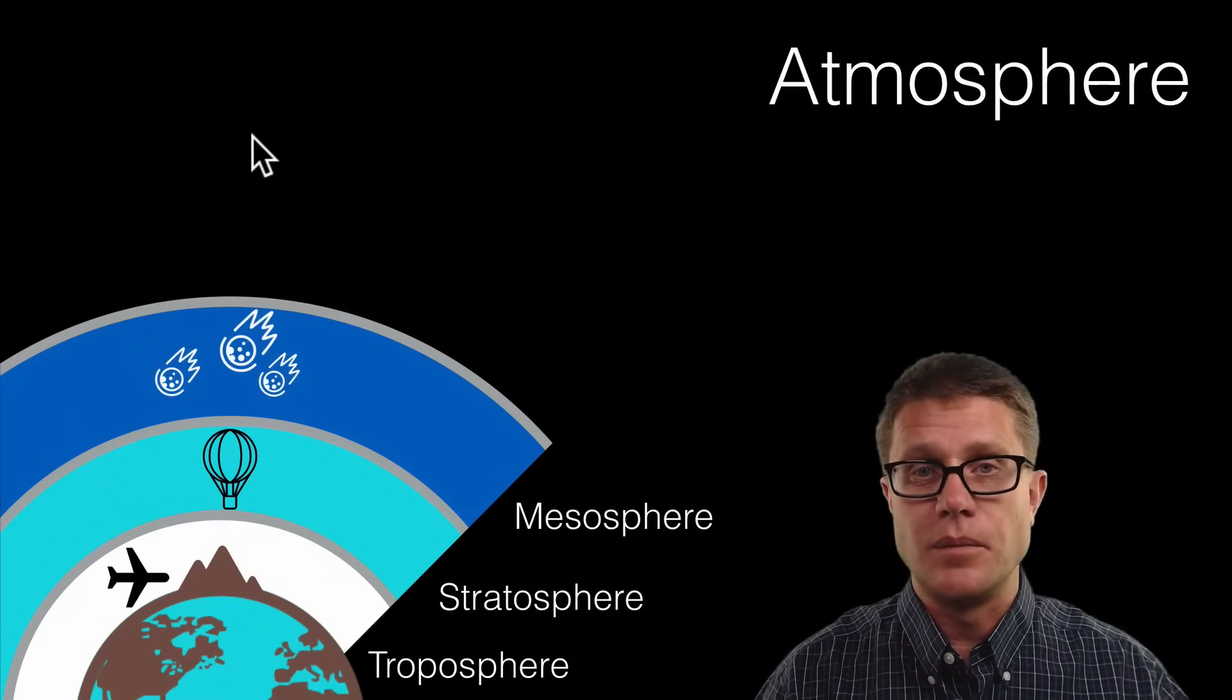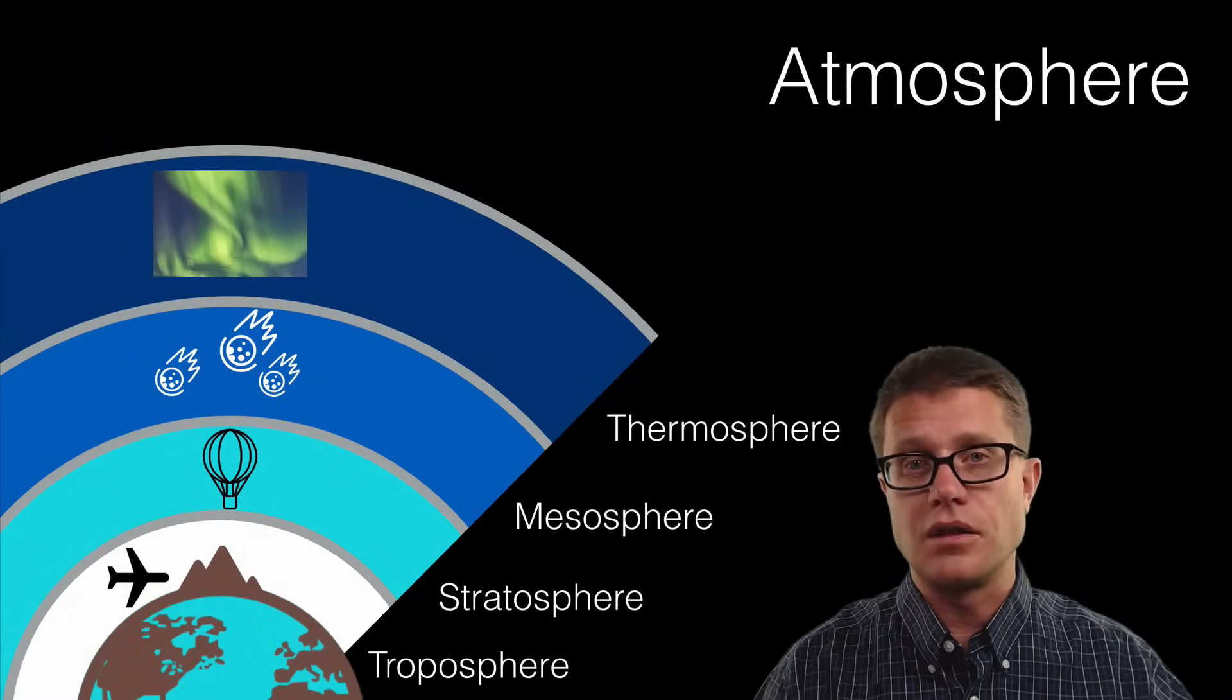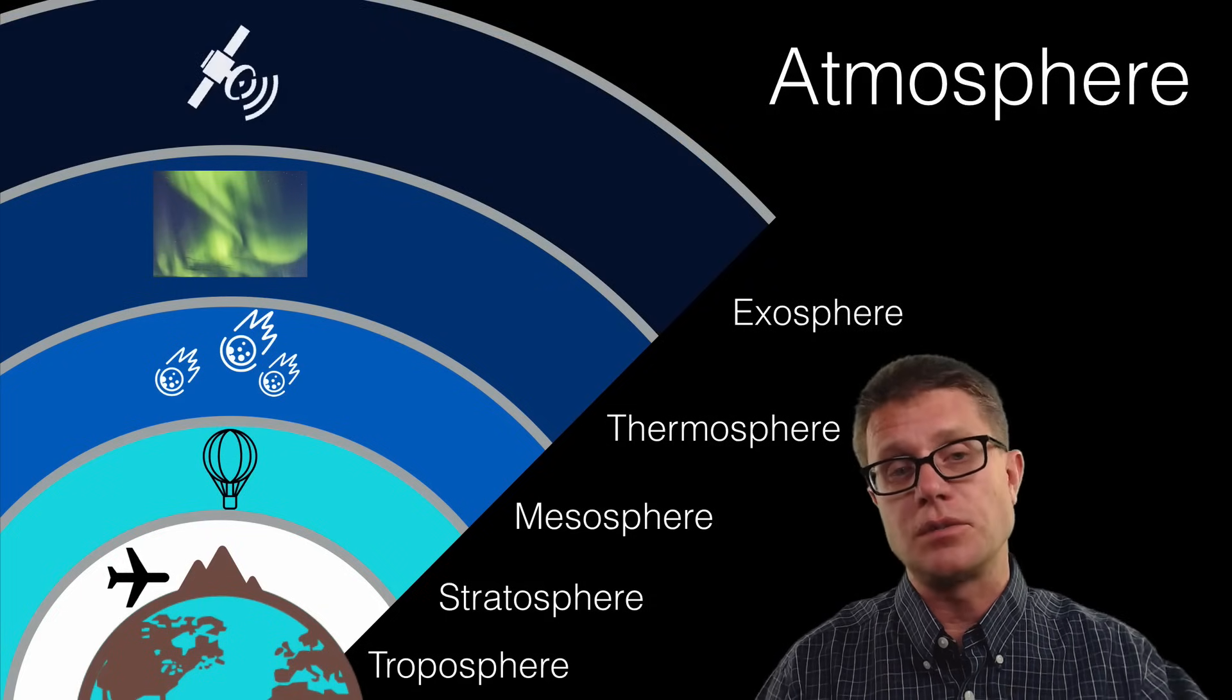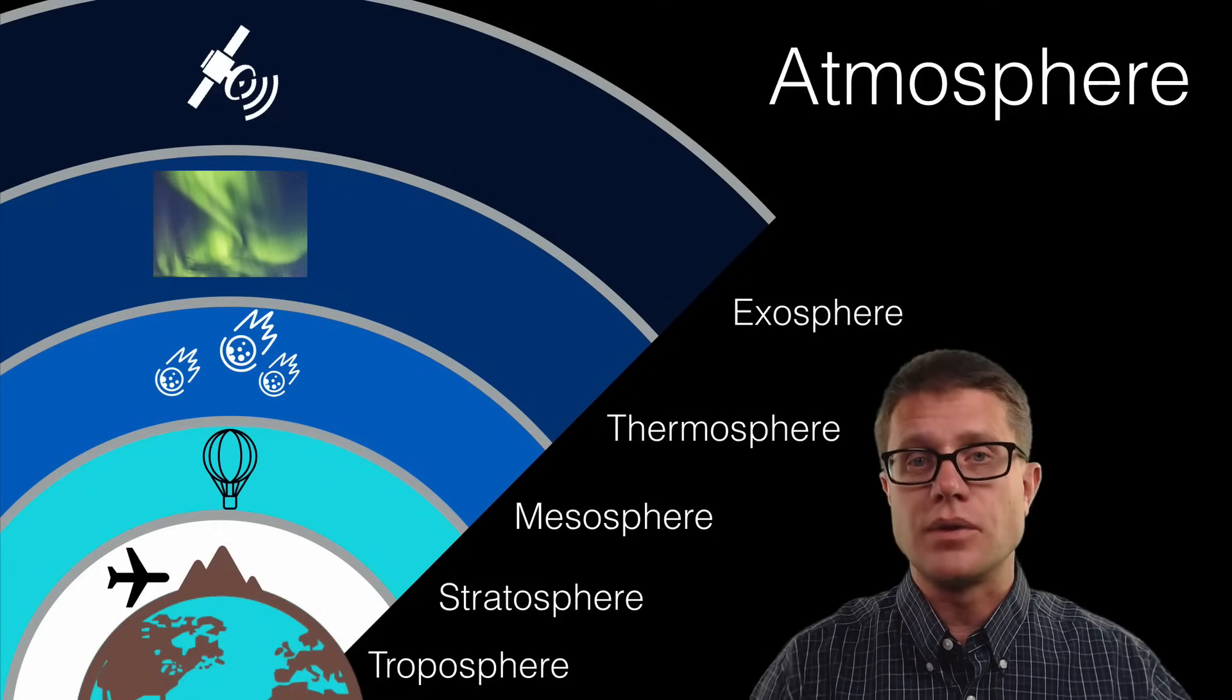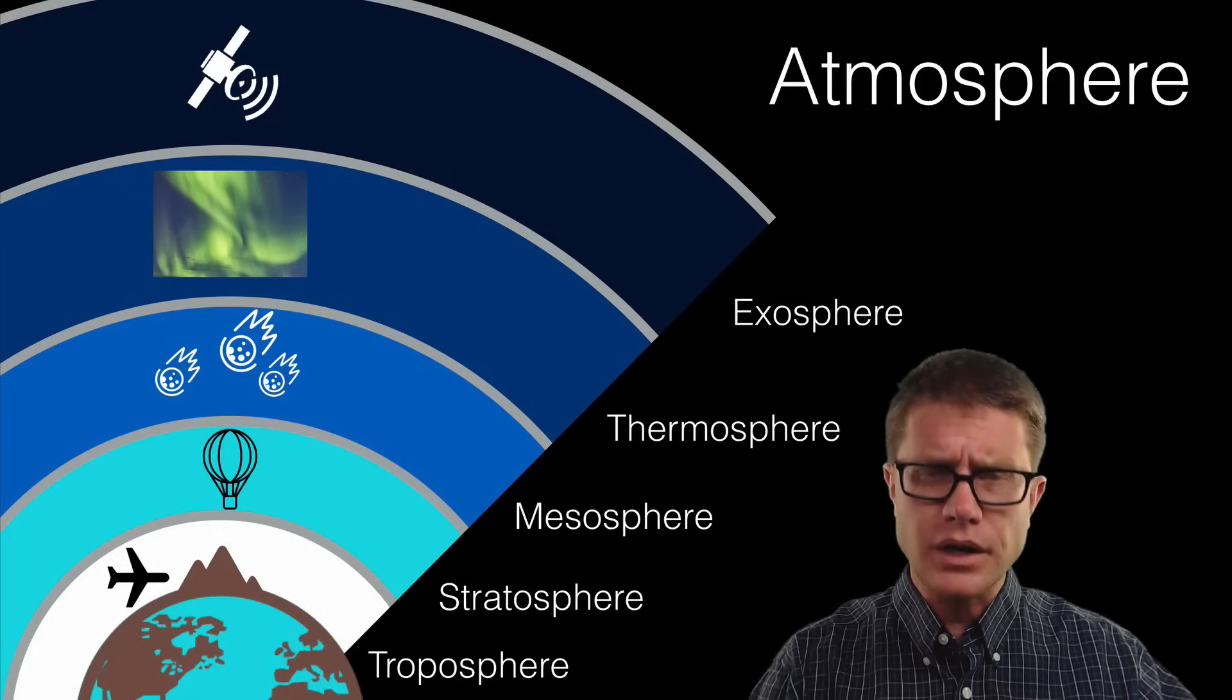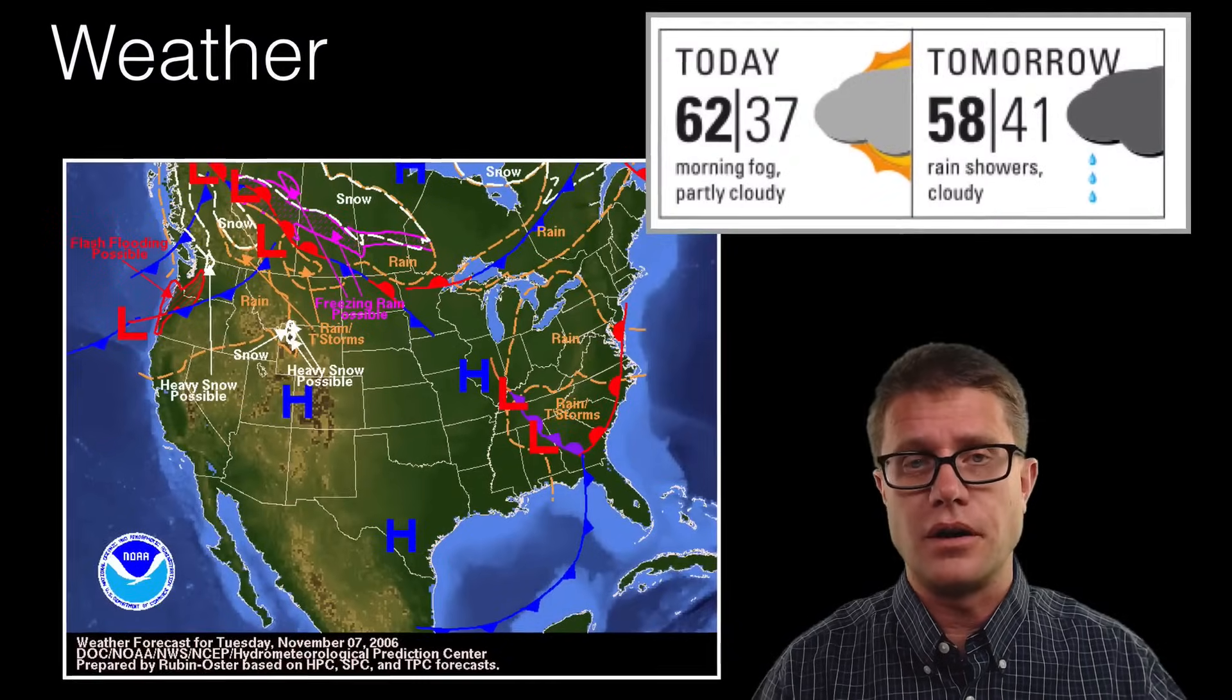Above the stratosphere we have the mesosphere, that is where meteors are burning up. Above that we have where the aurora are, that is the thermosphere. And then finally we are bordering space, this is the exosphere up here. We are going to increase density the closer we get to the earth because there is higher gravitational pull the closer we are.